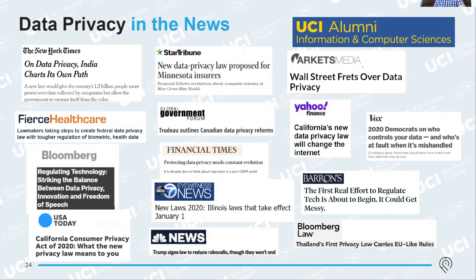Many companies are facing issues with data privacy regulation and being able to comply. It ties into cyber security in general because companies can't classify their data properly, let alone protect it. In order to protect any data privacy, you first need a very competent data classification program — otherwise you'll never be able to protect the data to begin with. It's all interrelated, but I'll focus more on the data privacy side today.